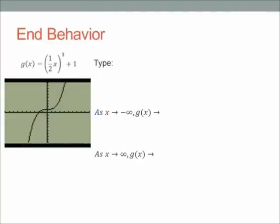Hi there, it's me, Mr. B. We're going to find the end behavior of the function g of x equals one-half x cubed plus one. Here's the graph on the screen. It's x cubed, so if it's x to the third or higher, that means it's polynomial. I can tell it's polynomial just from the way the graph looks — it kind of looks like a sideways S.